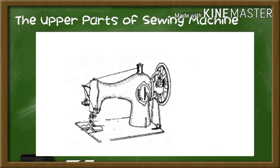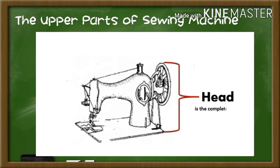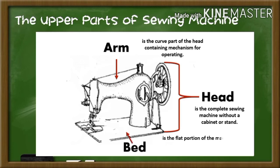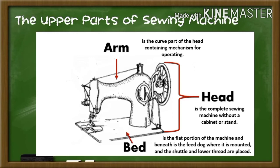This is the upper part of the sewing machine. It consists of three parts. First is the head. It is the complete sewing machine without a cabinet or stand. Arm. It is a curved part of the machine head containing the mechanism for operating. The bed. It is the flat portion of the machine, and beneath it is the feed dog where it is mounted, and the shuttle and lower thread are placed.